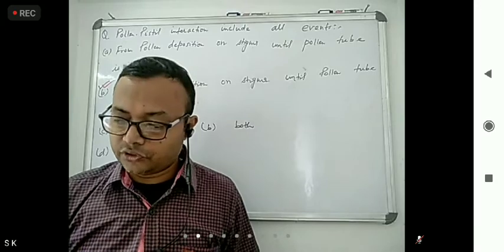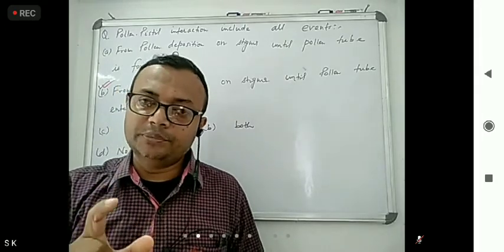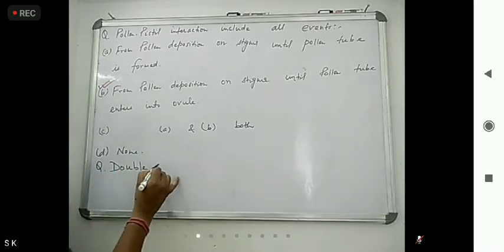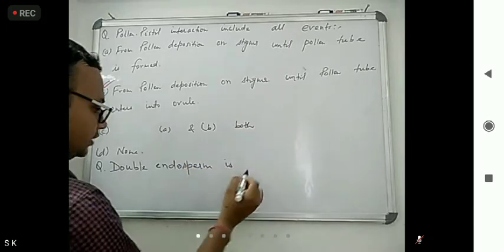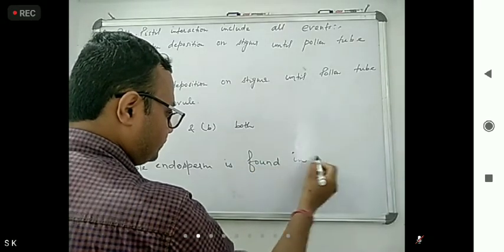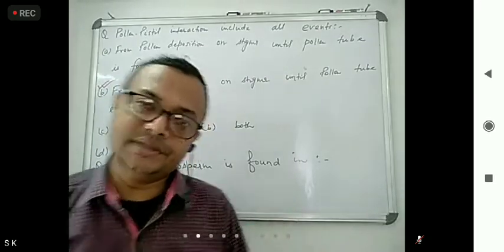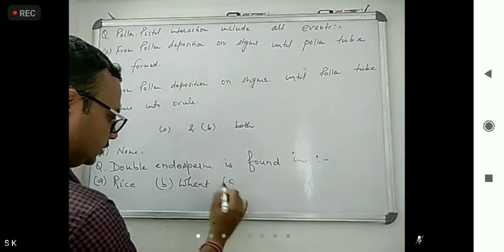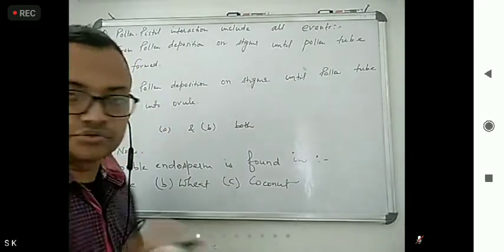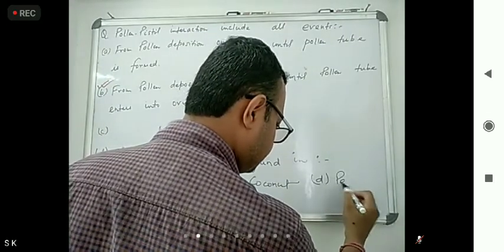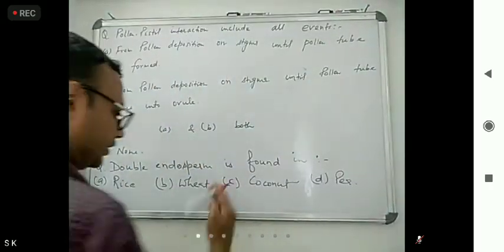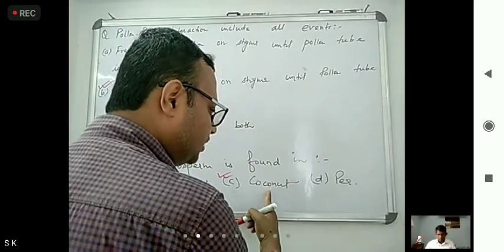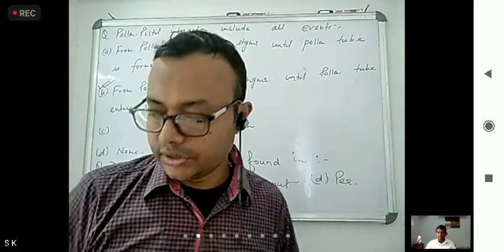Double endosperm is found in which organism? Options include rice, wheat, coconut, and pea. The correct answer is coconut, which contains both cellular and nuclear type endosperm — a helobial type — making it double endosperm. So double endosperm is found in coconut.